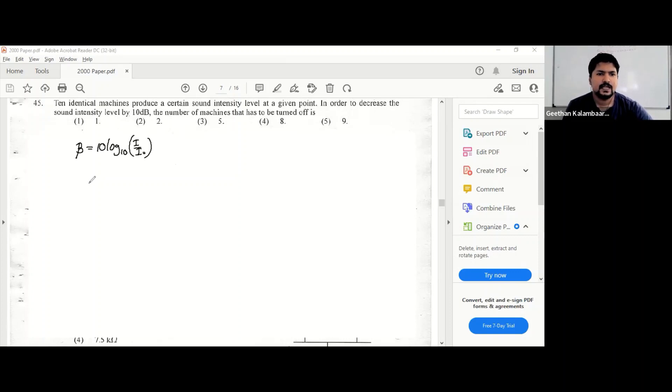10 identical machines produce sound. If you have one machine, it's producing intensity I. So 10 machines produce 10I. When you have 10 machines, these machines produce at a certain point 10 decibels. When you have n number of machines, the intensity is nI.